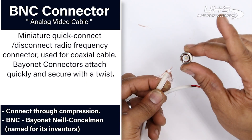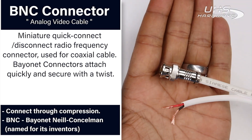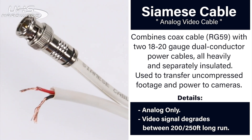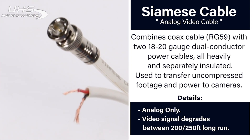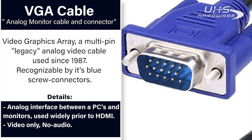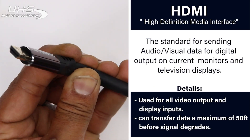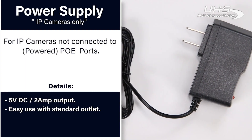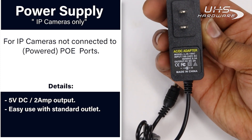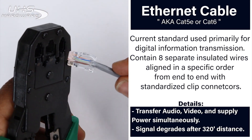Cables and connectors: BNC connectors are compression-style analog connectors used to terminate analog video cable — secure, dependable, and easy to use. Siamese cable is a combined run of coaxial cable RG59 with two insulated power cables to power analog cameras and transfer data to the DVR. VGA cable is a legacy analog video cable used to connect video output to an older monitor without HDMI. HDMI is the standard for transmitting high-res digital audio and visual data to current video monitors. Ethernet cable is the current standard for digital IP systems, also known as Cat5e or Cat6, used to transfer audio, video, and supply power over one line.